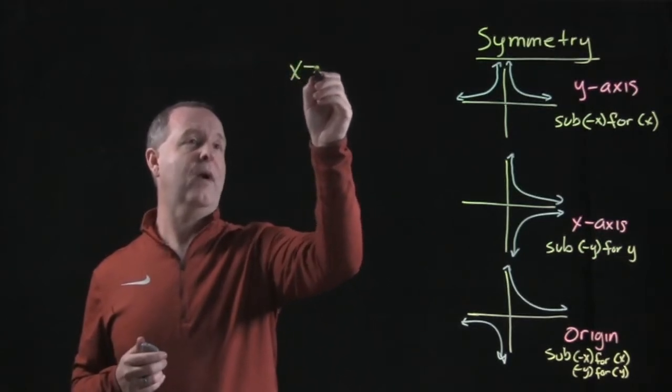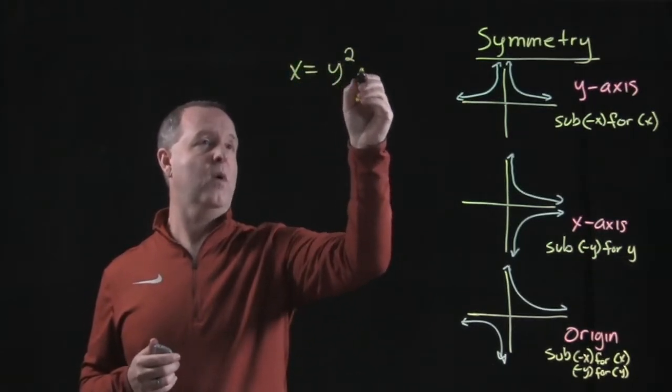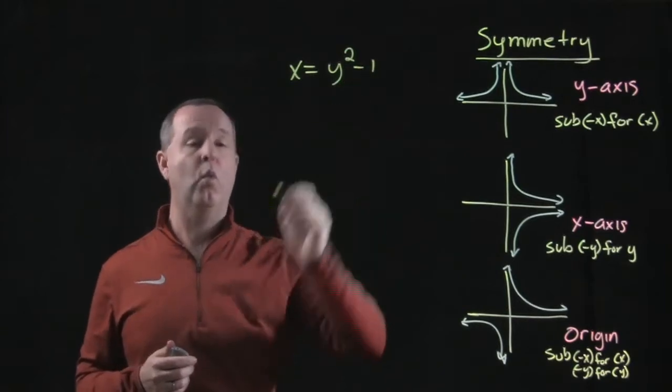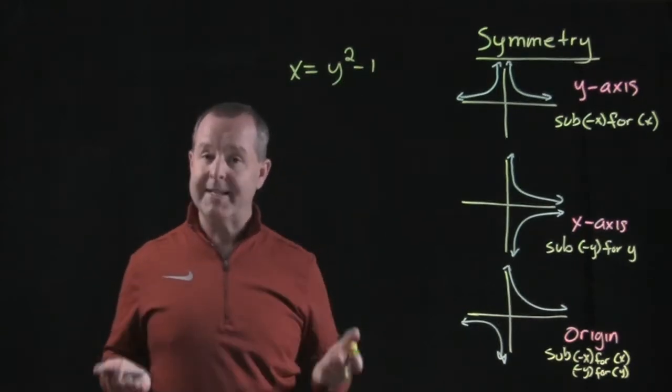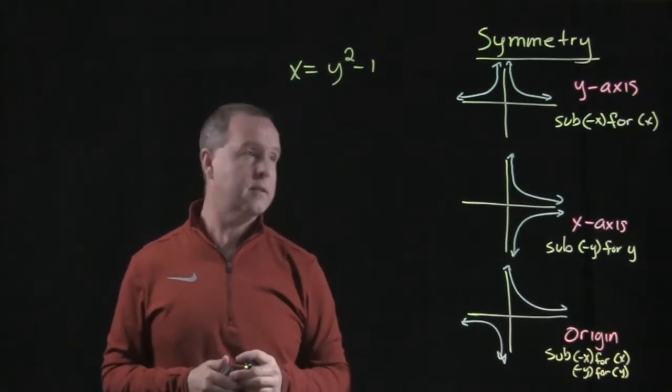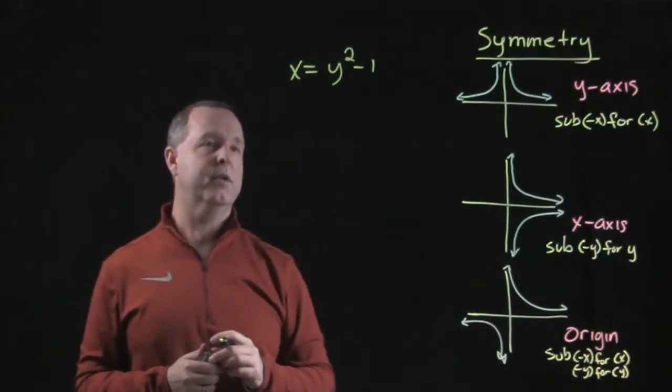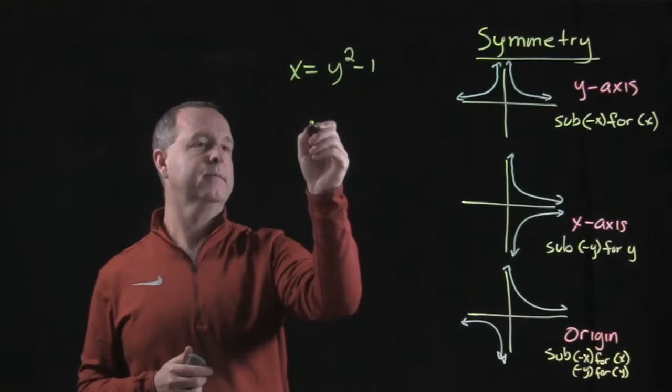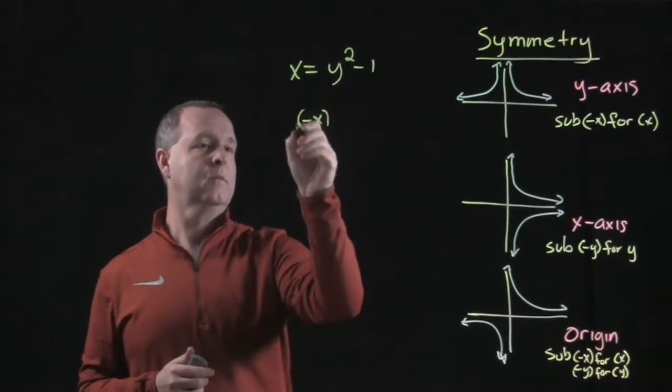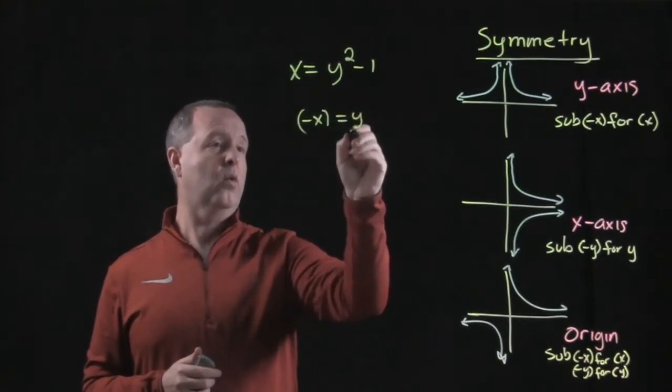So let's imagine we have a graph that says x equals y squared minus 1. Now we want to test that for symmetry. To test it for the y-axis, what we'll do is we'll substitute a negative x in for x and work it down.